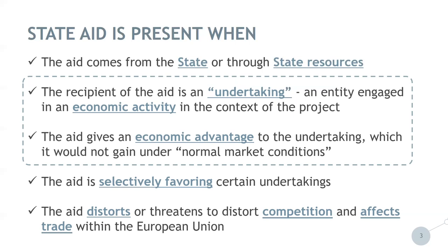Please keep in mind that State Aid applies only if partners carry out project activities for which it can reasonably be assumed that they are of economic nature. The question to be raised here is: could planned project activities, in principle, be carried out by an entity in order to make a profit? It is also to be noted that if the project partner carries out non-economic activities in the project, there is no State Aid relevance — even if that organisation normally carries out activities of an economic nature outside the Interreg Central Europe project. The contrary can also occur: economic activities may be performed in the project by an organisation which normally does not carry out economic activities, which could then result in State Aid relevance.